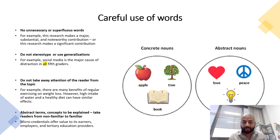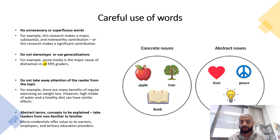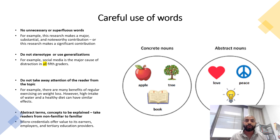Be very careful with word choice. Avoid superfluous words — for example, instead of writing 'this research makes a major, substantial, and noteworthy contribution,' simply write 'this research makes a significant contribution.' Also avoid stereotypes and generalisations. You cannot write 'social media is the major cause of distraction in all fifth graders' — the word 'all' and 'major cause' are sweeping claims you must be able to substantiate.